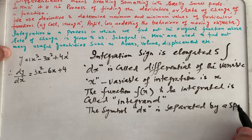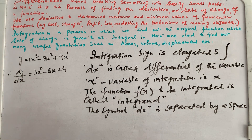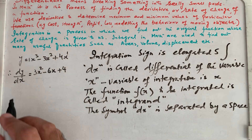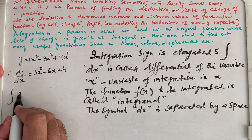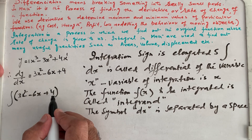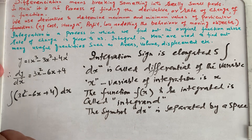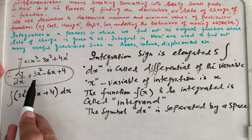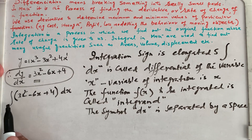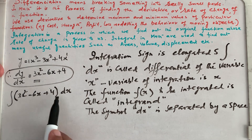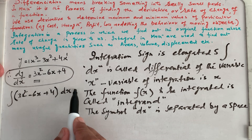Now we have some basic knowledge about integration. We started with differentiation and now enter into integration to get back to the original function. If I integrate 3x squared minus 6x plus 4, and when we have more than one term, we put them in brackets followed by a space and then dx. This question is asking me to convert this derivative back into the original function.